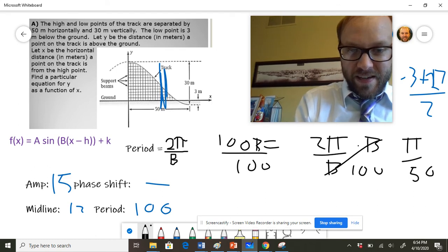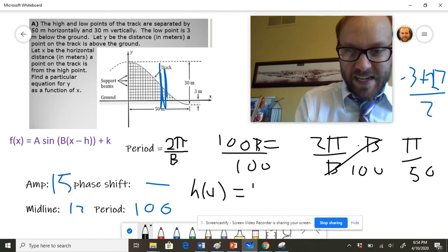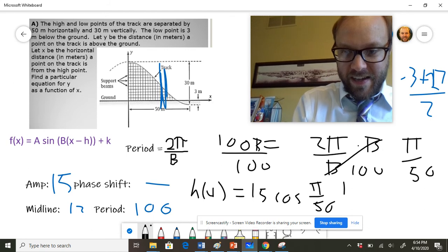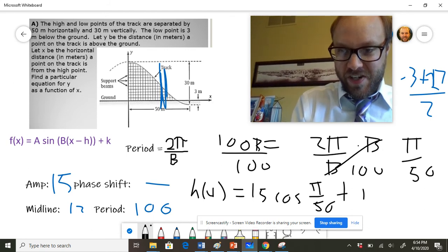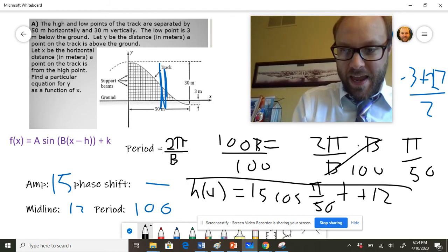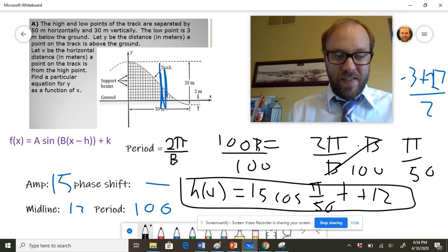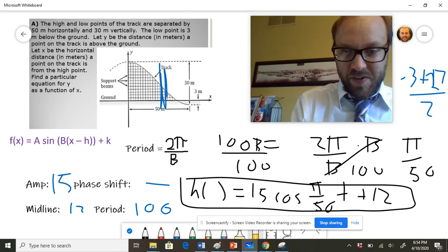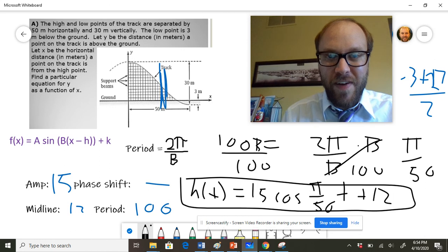So we can put all this together. Let's see. The height is going to be 15 times the cosine of π over 50 times T, and it's going to be shifted up 12. And that should be our final equation there. Again, I'm working using a T variable here, so that's supposed to be H(T) there. And that's our final function.